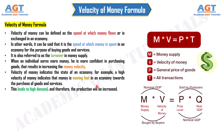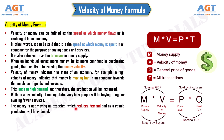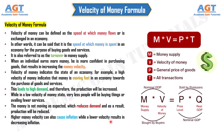While in a low velocity of money state, very fewer people will be buying things or availing fewer services. The money is not moving as expected, which reduces demand and as a result, production will be reduced. Higher money velocity can also cause inflation, while a lower velocity results in decreasing inflation.